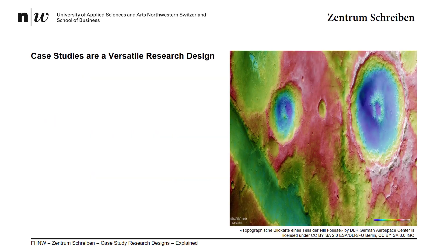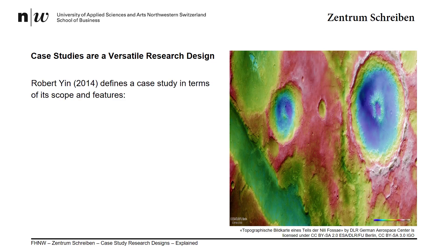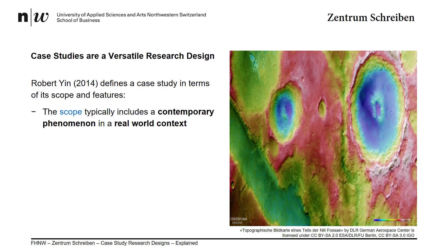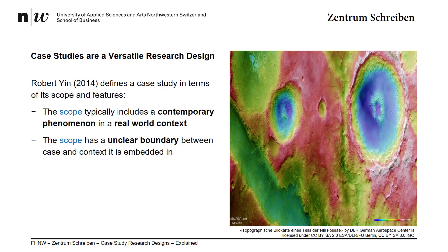Take a look at the picture on the right of your screen. What do you think it is that you see there? If you thought that you were looking at a topographical map of craters on a planet's surface, then you would have been correct. For the purposes of this tutorial, however, this is an excellent illustration of the nature of a context in which cases are embedded. Robert Yin defines a case study in terms of its scope and features. The scope typically includes a contemporary phenomenon in a real-world context, with an unclear boundary between the case and the context in which that case is embedded.